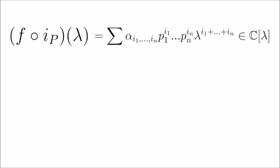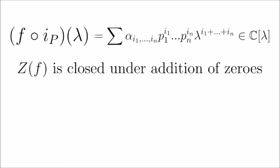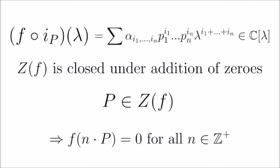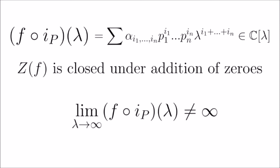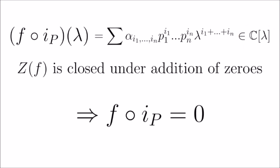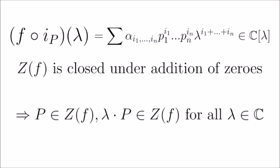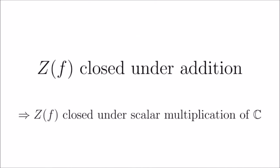Now, this is where the magic happens. Suppose that the zero set of our original polynomial is closed under addition of zeros. Then, by definition, for any p in the zero set, n times p, which we interpret as repeated addition coordinate-wise, is also in the zero set. We can interpret this polynomial through the methods of complex analysis and see that since arbitrarily large multiples of p are zero, then by definition the limit of f composed with i_p does not go to infinity as lambda approaches infinity. Since we're talking about an arbitrary finite degree polynomial, we get that this composition is actually equal to zero. This means that any scalar multiple of a point in the zero set evaluates to zero under this polynomial. Thus, at least in the complex case, if the zero set of a polynomial is closed under addition, then it is closed under scalar multiplication, motivating us to think purely about polynomials whose zero sets are closed under scalar multiplication.